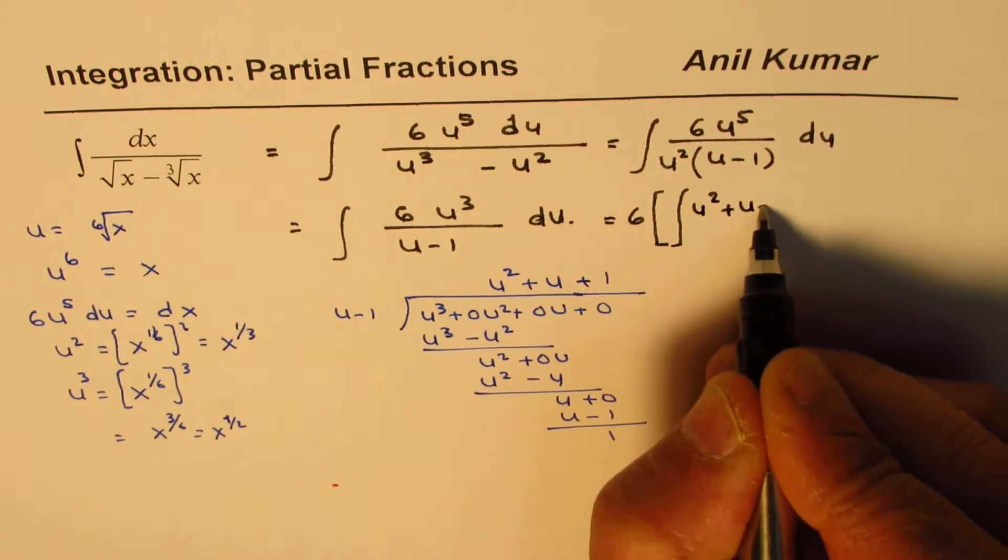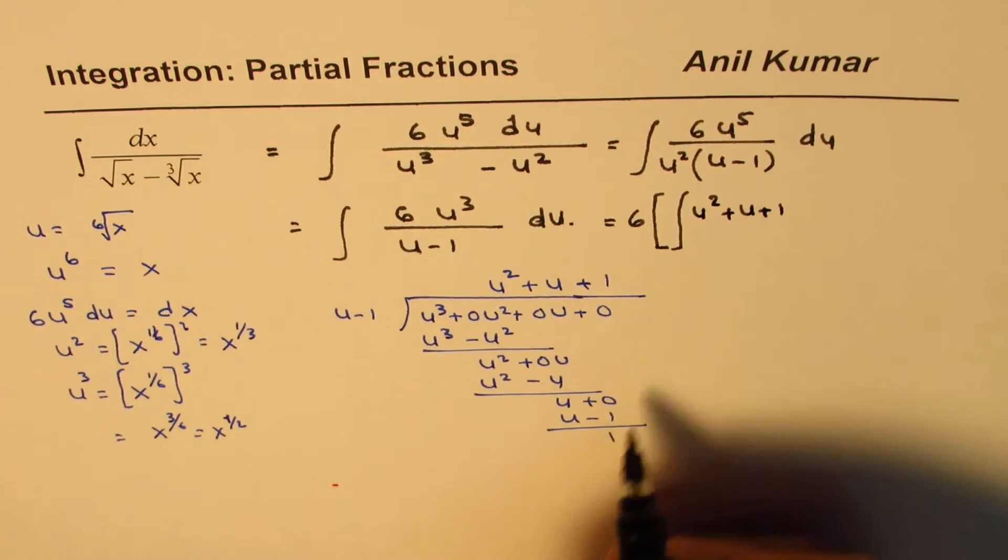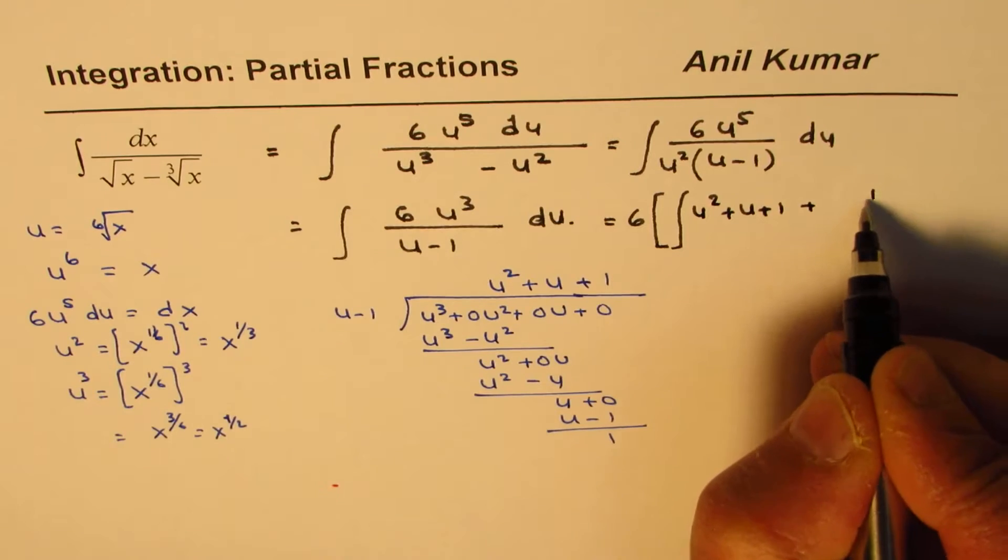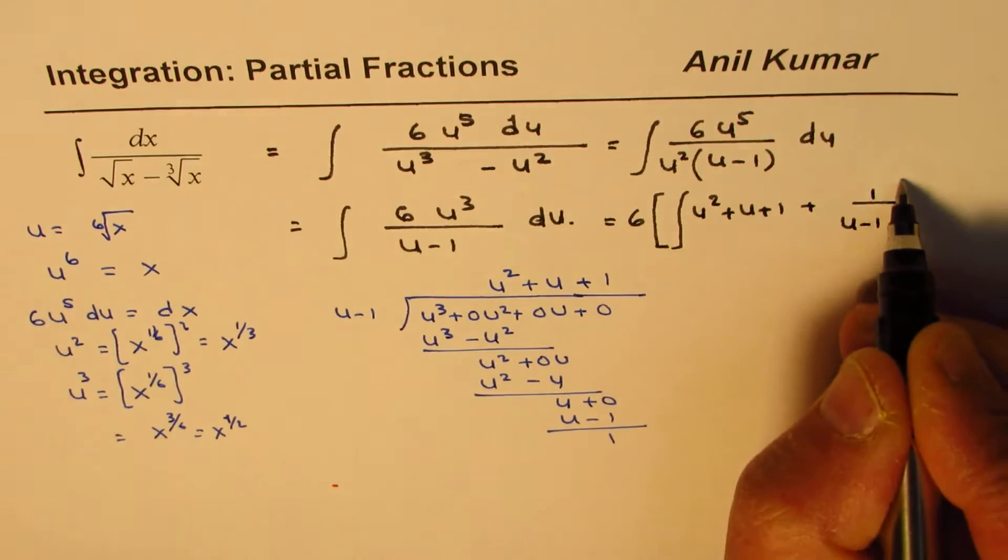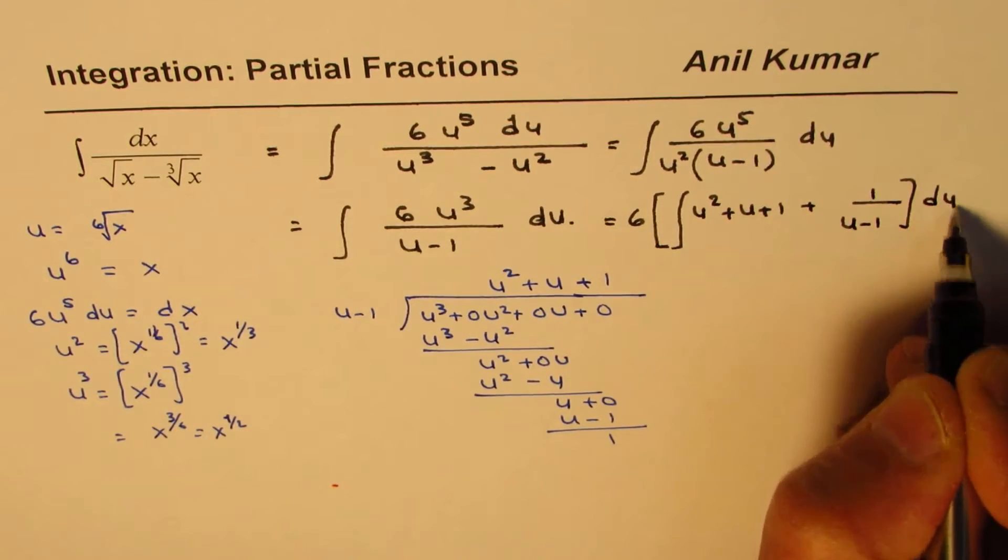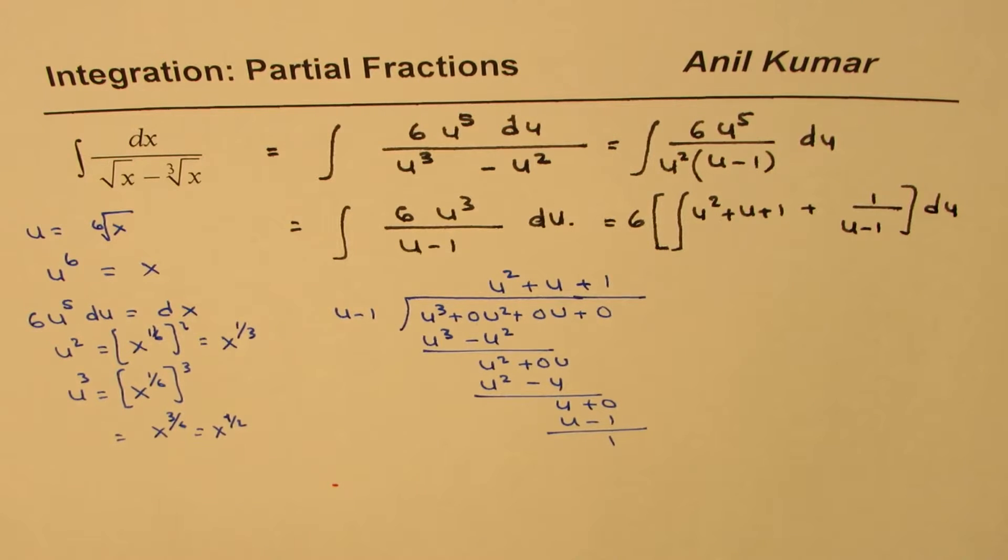u square plus u plus 1. And this is plus 1 here, plus 1 over u minus 1 du. Do you see that? So that is what we get. So we kept 6 outside. And we wrote u square plus u plus 1 plus 1 over u minus 1 du. Perfect.